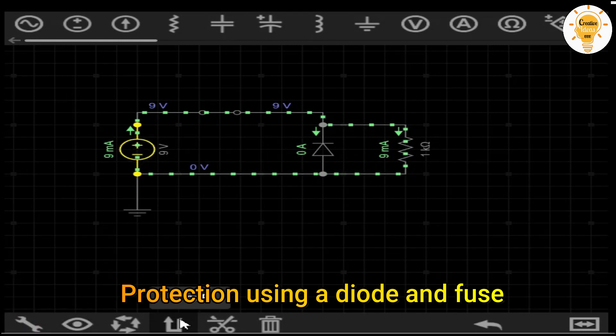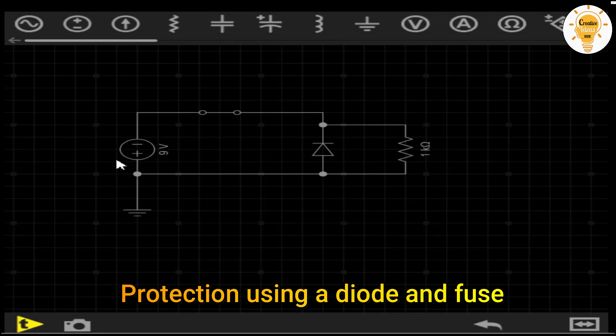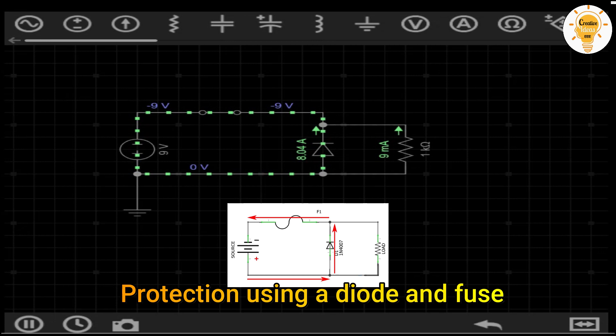That is why, in this circuit, it is recommended to use a diode and a high-speed fuse in order to minimize the time during which the circuit is reverse biased.